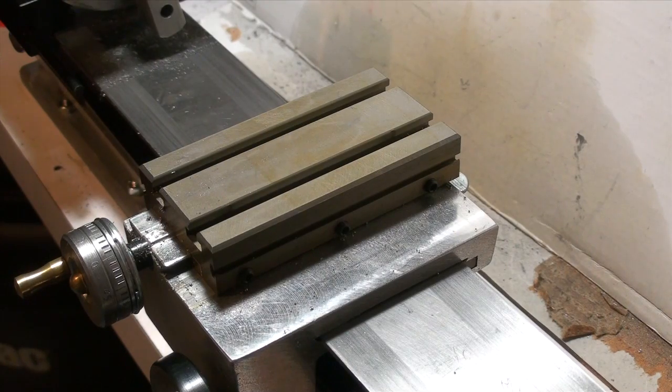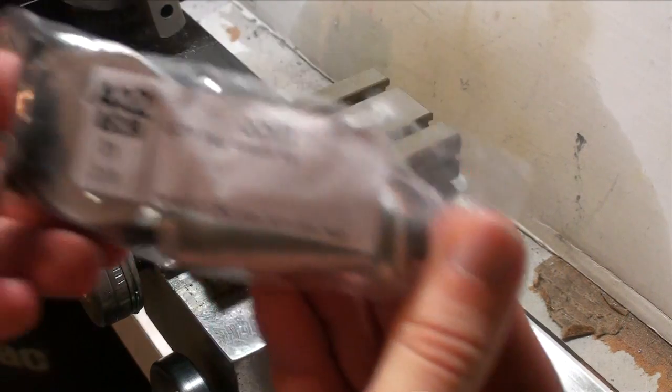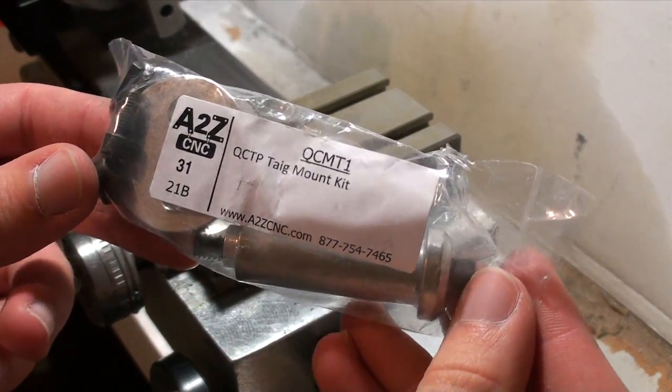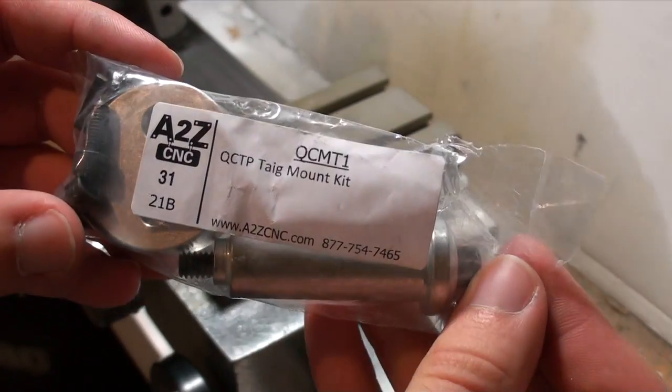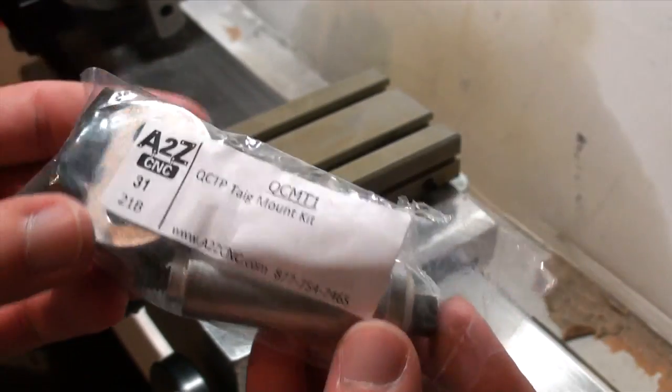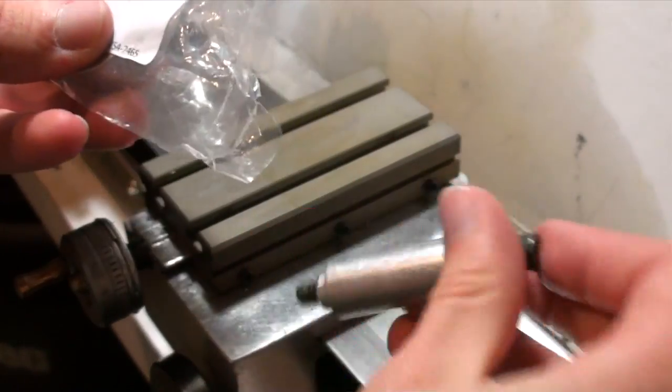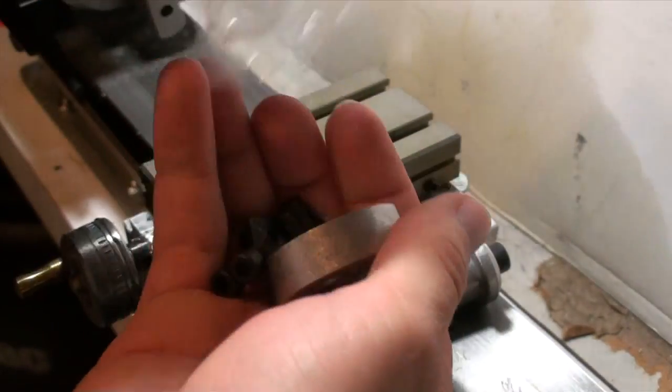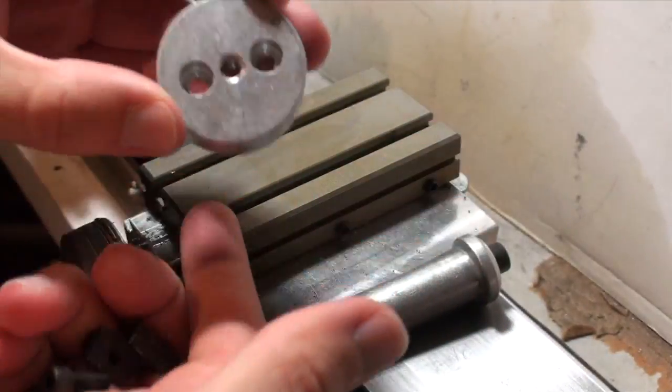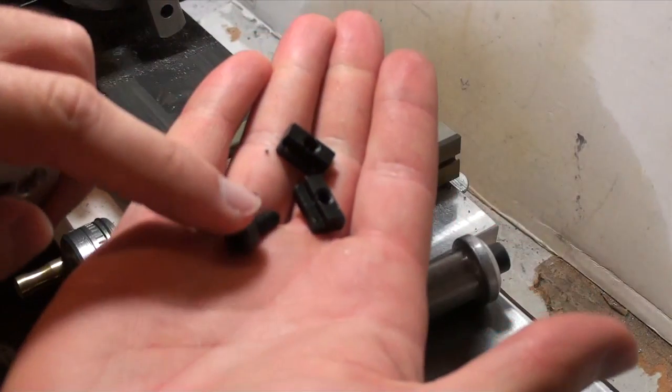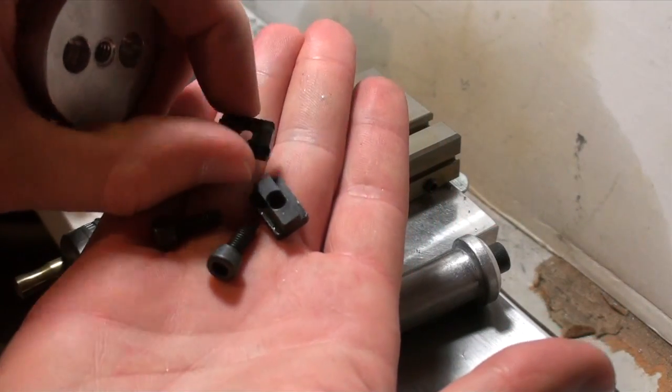Alright so installing this, you start off with the mounting kit. I have a Taig lathe so that's the mounting kit I'm going to be using. Just wanted to show you what it looks like in the package. You have a spacer, some bolts, and T-nuts.